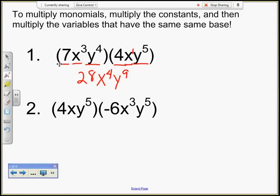Let's try another one. Let's do my constants first. I've got 4 times negative 6. That's going to give me negative 24. I have x to the first power times x to the third power, x to the fourth power. And I have y to the fifth power times y to the fifth power. Remember, I'm just adding my exponents, and I end up with y to the tenth power.